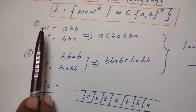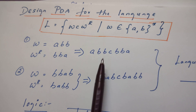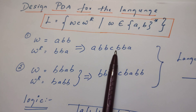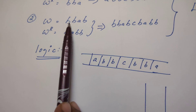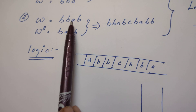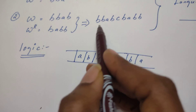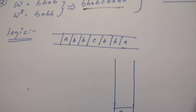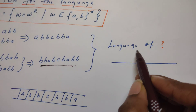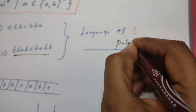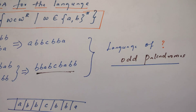Here are two examples. W is ABB, W^R is BBA, so WCW^R is ABBCBBA. Similarly, W is BBAB, W^R is BABB, giving BBABCBABB. This language is in fact a language of palindromes — more crisply, odd palindromes, meaning every string is of odd length.